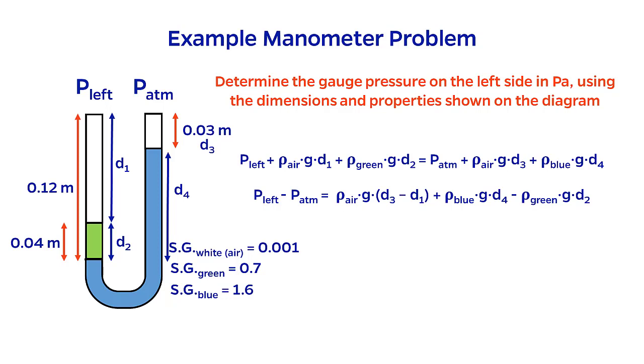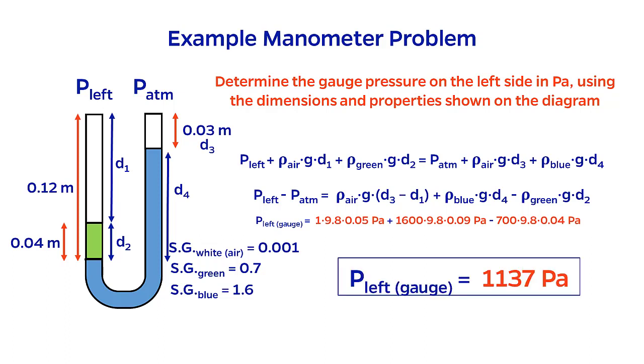Pay careful attention to my units. I'm putting densities in kilograms per meter cubed, g is in meters per second squared, and I'm leaving the heights in meters. This combination of units yields pascals, which is worth convincing yourself if you're not sure. Performing the calculation, I find that the gauge pressure is 1137 pascals.